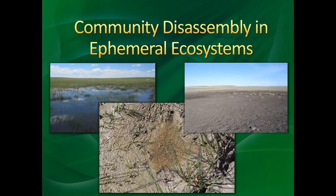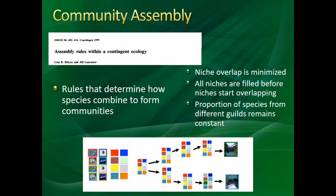This is the last lecture thinking about temporal ecology. I wanted to end up thinking about some of the research I've done looking at community disassembly — the opposite process of community assembly. We're going to be talking about this in the context of ephemeral ecosystems. There's a famous review paper in the journal Oikos that formally set out what we should think about with assembly rules.